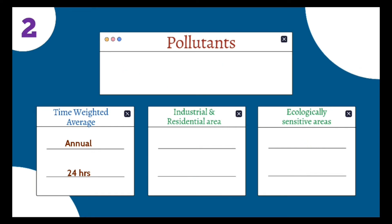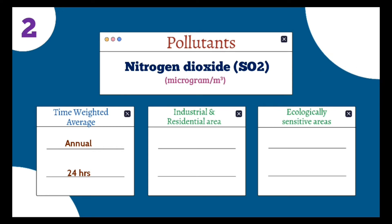The second pollutant is nitrogen dioxide (NO₂), and its unit is micrograms per meter cube. In industrial and residential areas, the annual weighted average should not be more than 40 µg/m³, and the 24-hour value should not exceed 80 µg/m³. In ecologically sensitive areas, the annual value should not exceed 30 µg/m³, and the 24-hour value should not exceed 80 µg/m³.